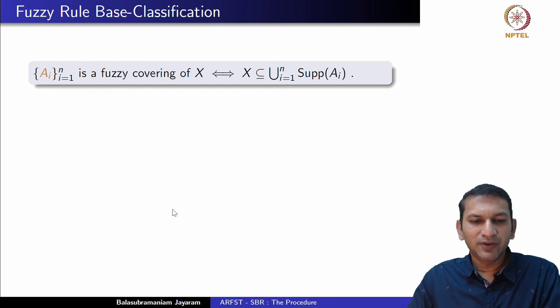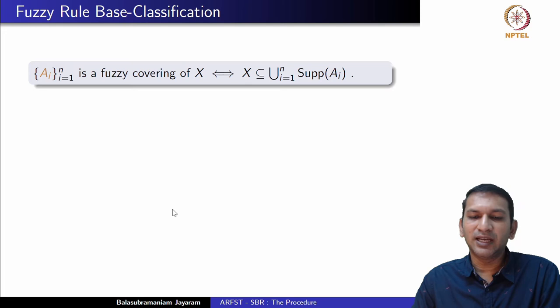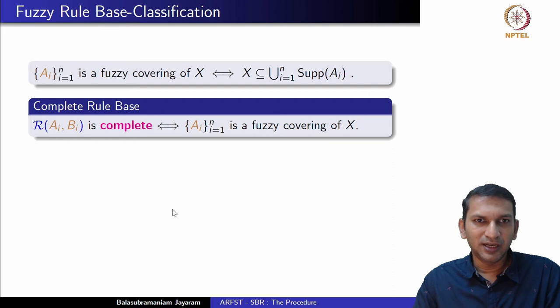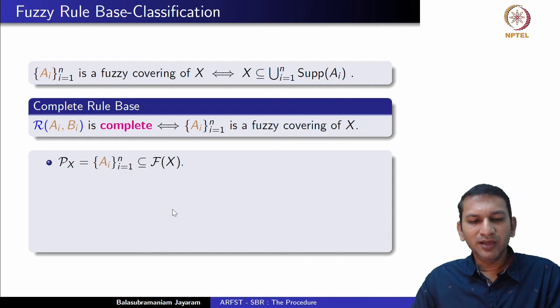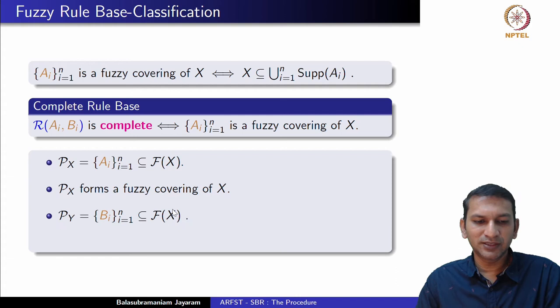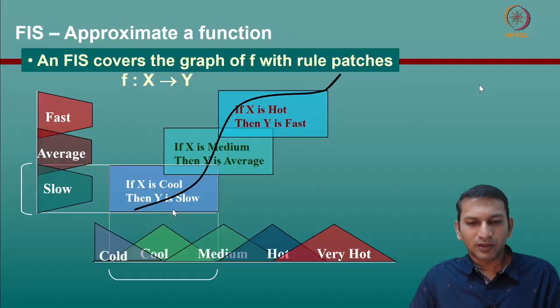A collection of A_i's forms a fuzzy covering of X if and only if the union of the supports of the A_i's contains X. Now let's define what a complete rule base is. Given a set of fuzzy if-then rules, the rule base is said to be complete if and only if collecting all the antecedents forms a fuzzy covering of X. We denote by P_X the collection of fuzzy sets on X which form a fuzzy covering, and by P_Y a collection of fuzzy sets on F(Y) which may or may not form a fuzzy covering of Y.